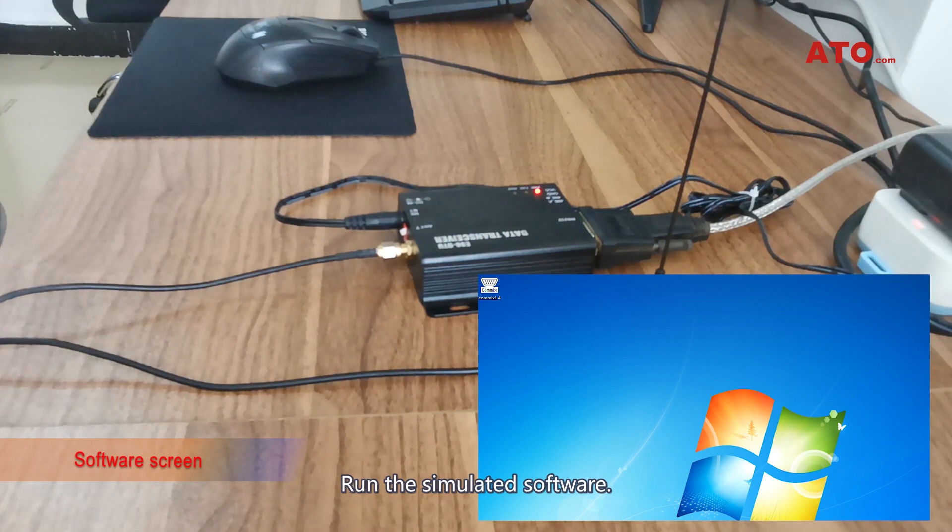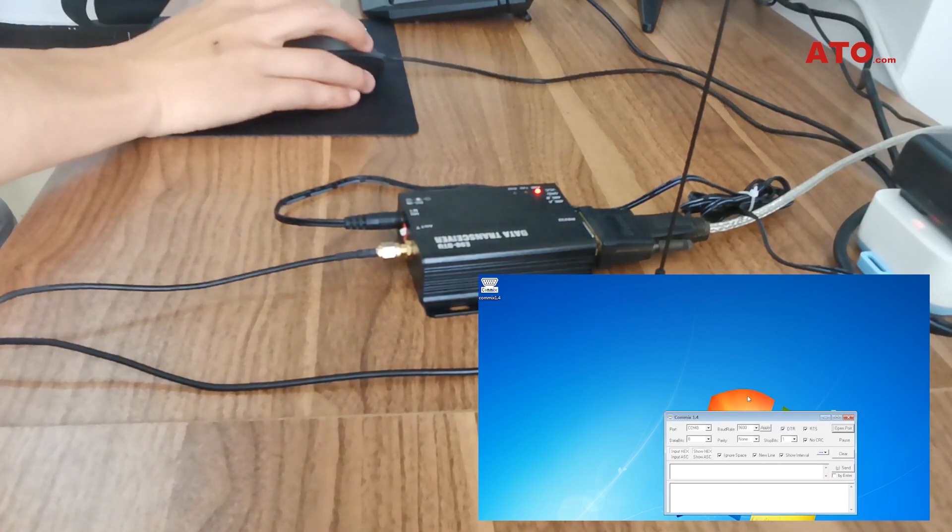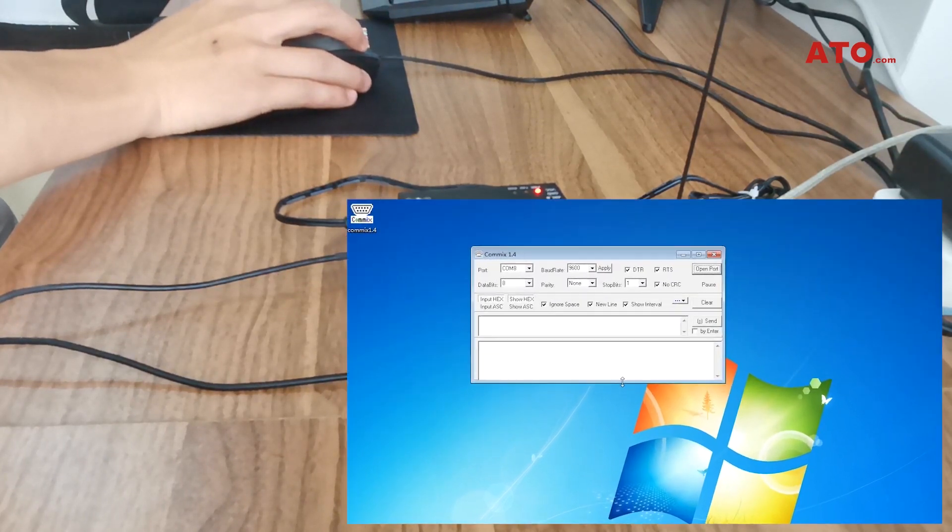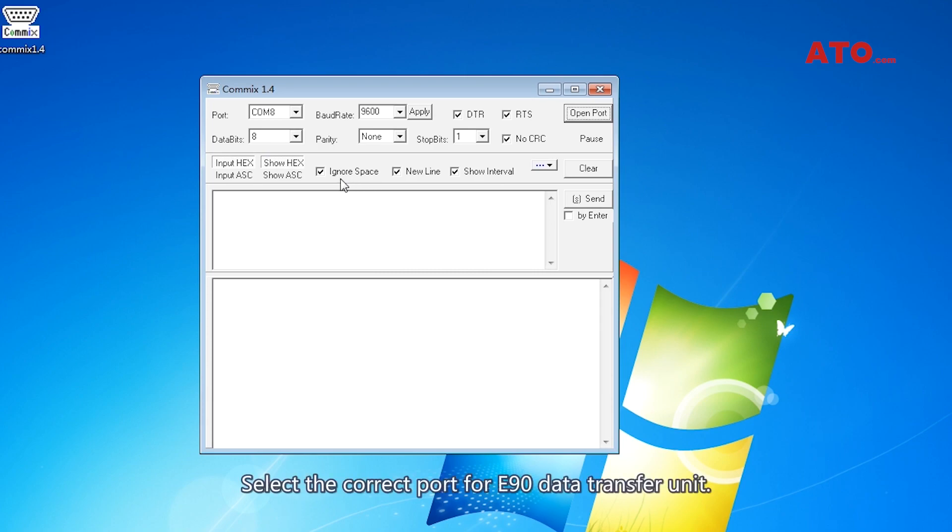Run the simulation software. Select the correct port for E90 data transfer unit. COM8 is for E90 here. Make sure everything is okay. Open the port.